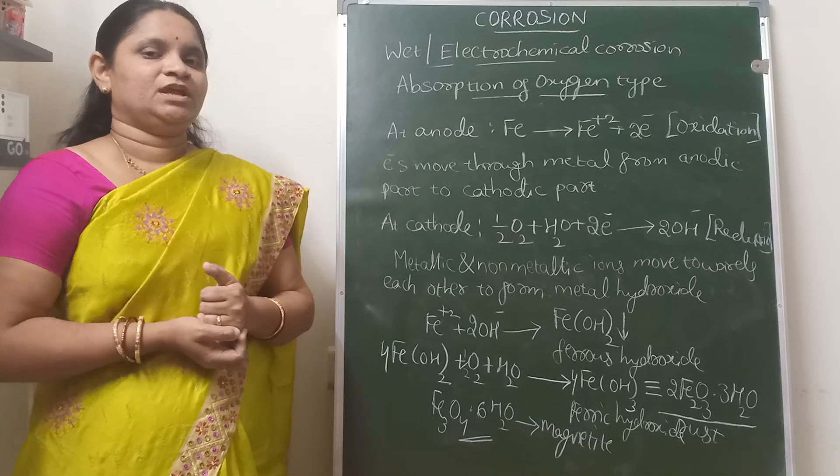In the solution, we have OH⁻ ions as well as Fe²⁺ ions. The Fe²⁺ ions migrate towards the cathodic part and the OH⁻ ions migrate towards the anodic part. At some place in between the anode and cathode, both combine to form ferrous hydroxide, Fe(OH)₂.